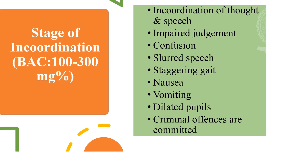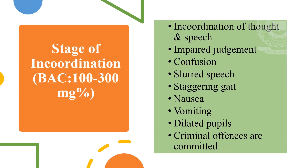The second stage is the stage of incoordination, which occurs when the blood alcohol concentration is more than 300 mg per 100 ml. The symptoms include incoordination of thought, speech, impaired judgment, confusion, slurred speech, staggering gait, nausea, vomiting and dilated pupils. Usually, criminal offenses are committed in this stage.